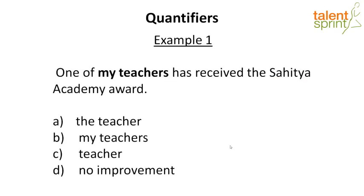For example: 'Each of the girls sings well.' Each of the girls — plural subject — sentence begins with 'each of.' So one of, each of, sum of are always followed by a plural subject. 'Every one of the experiments is complete' — every one of the experiments is another example of this rule.